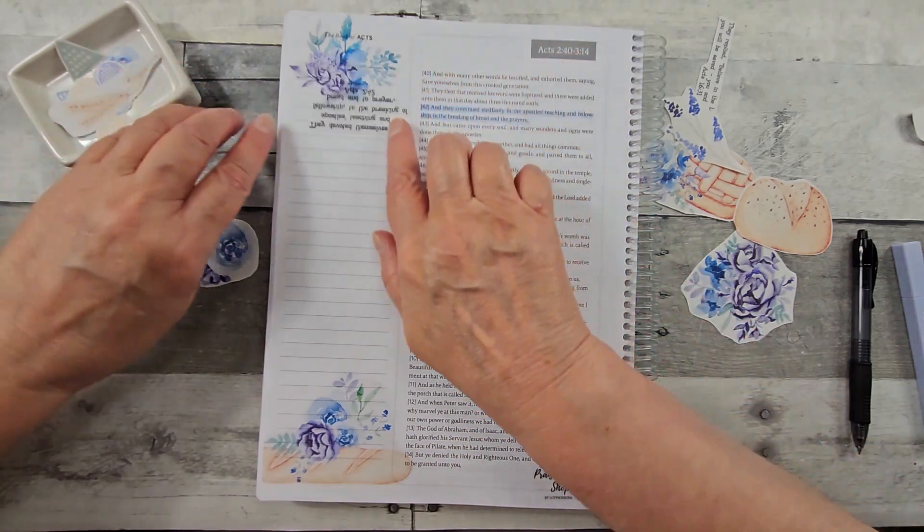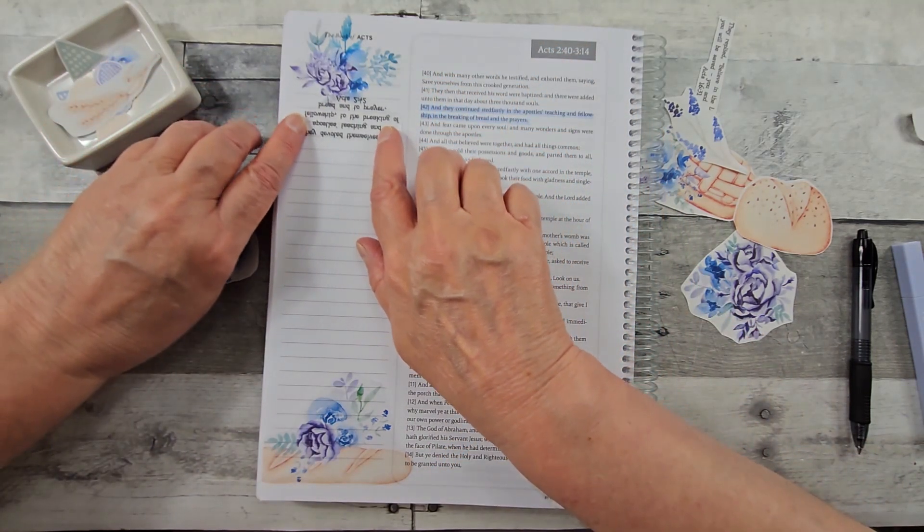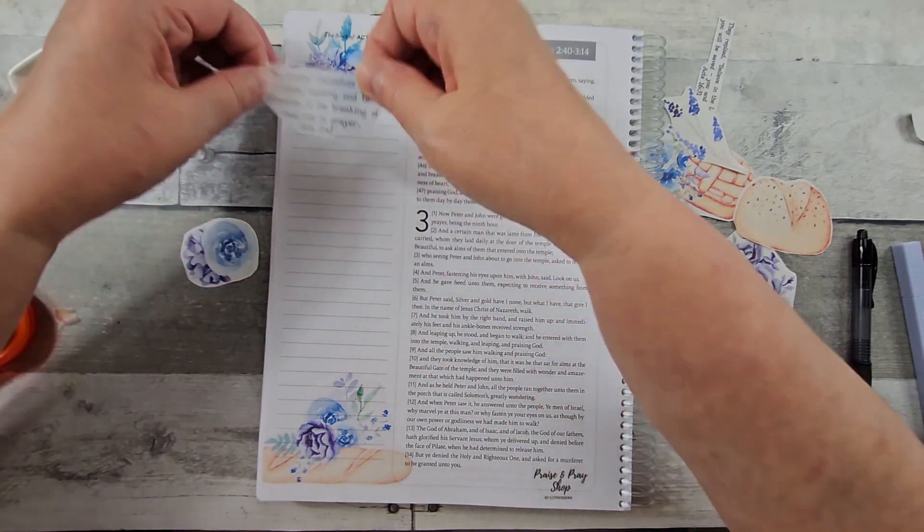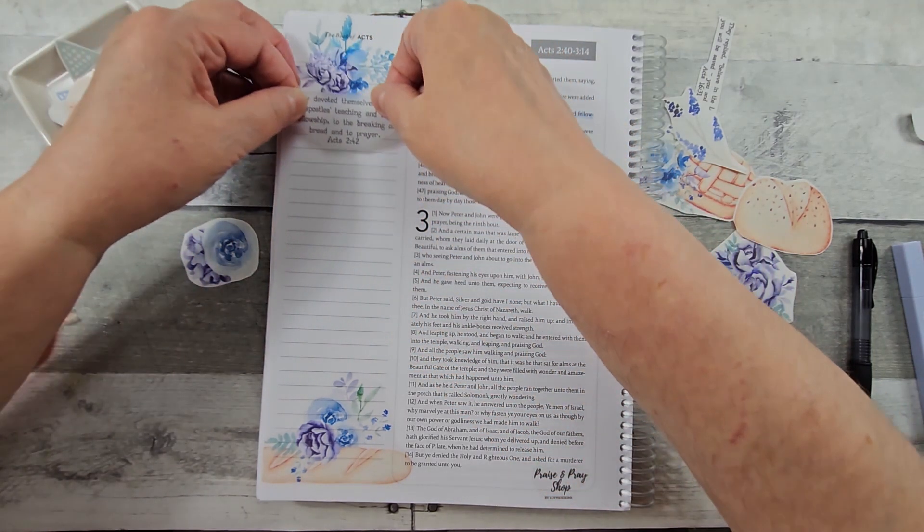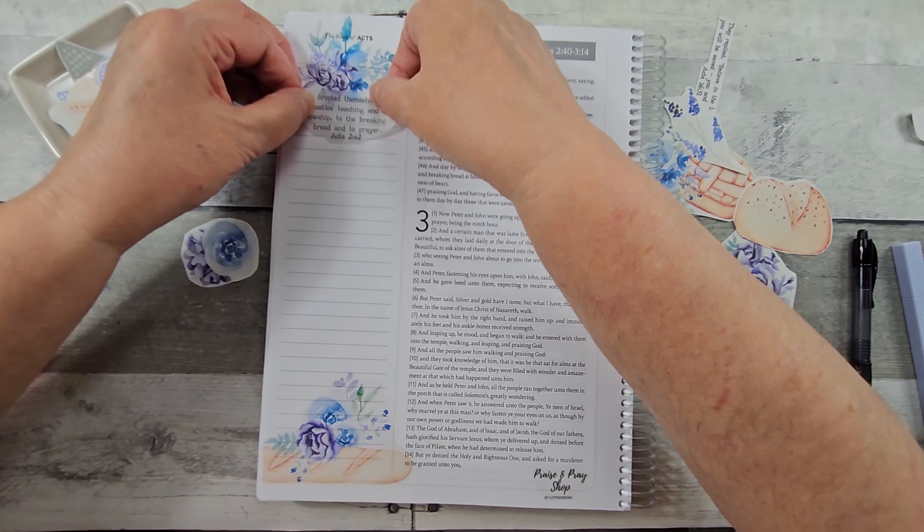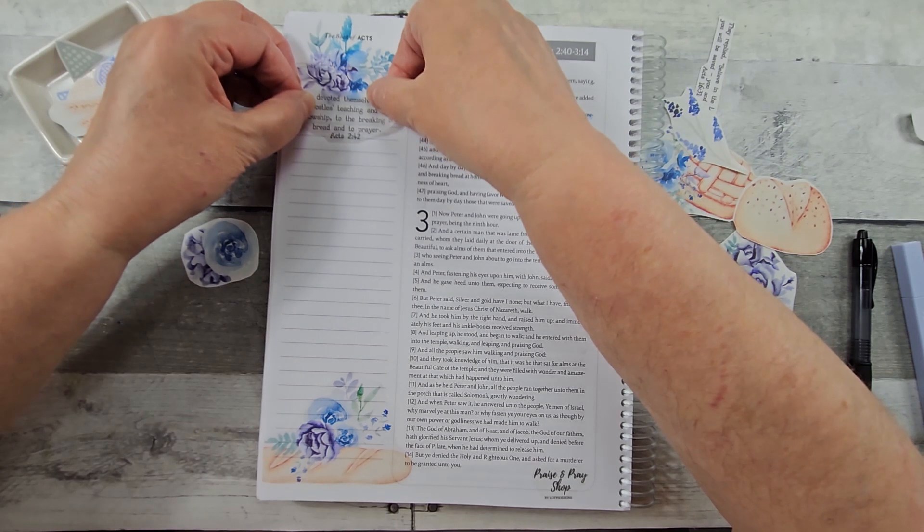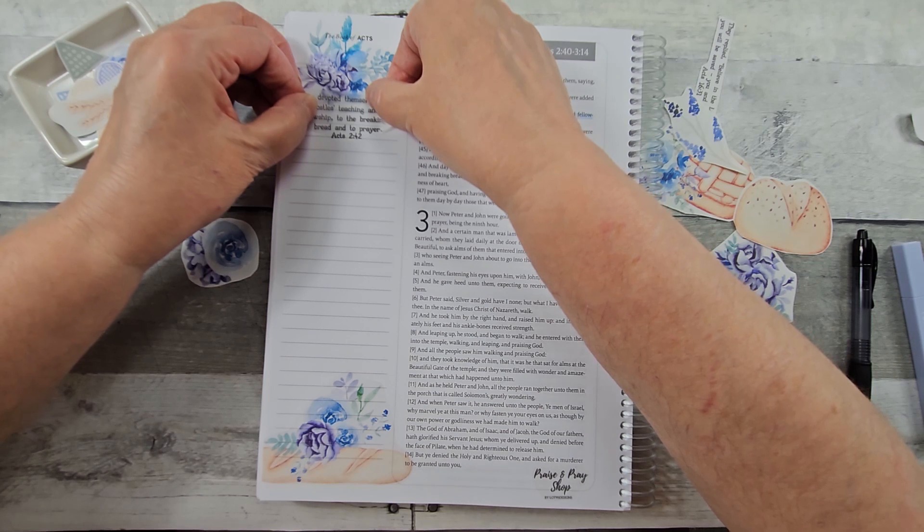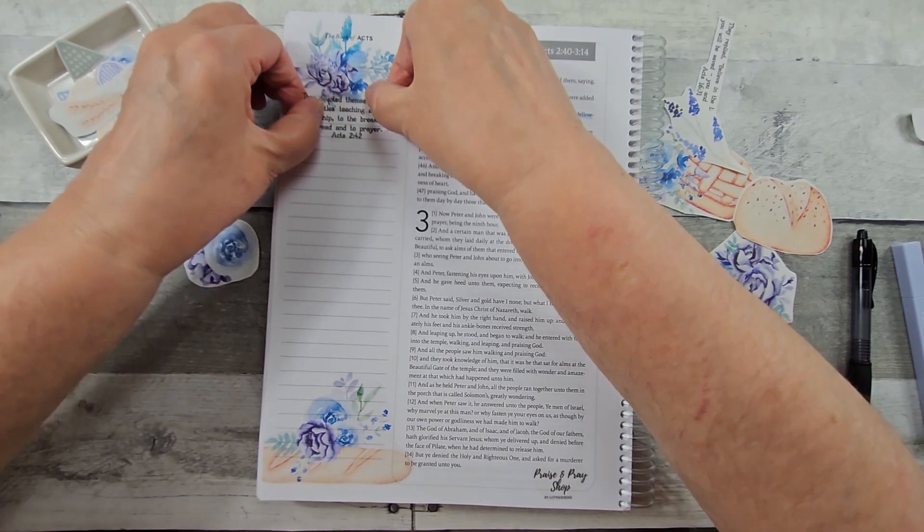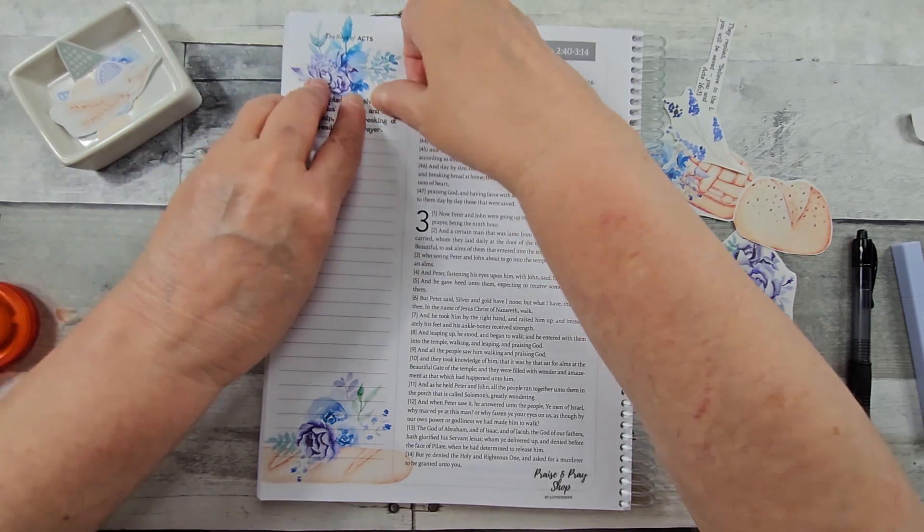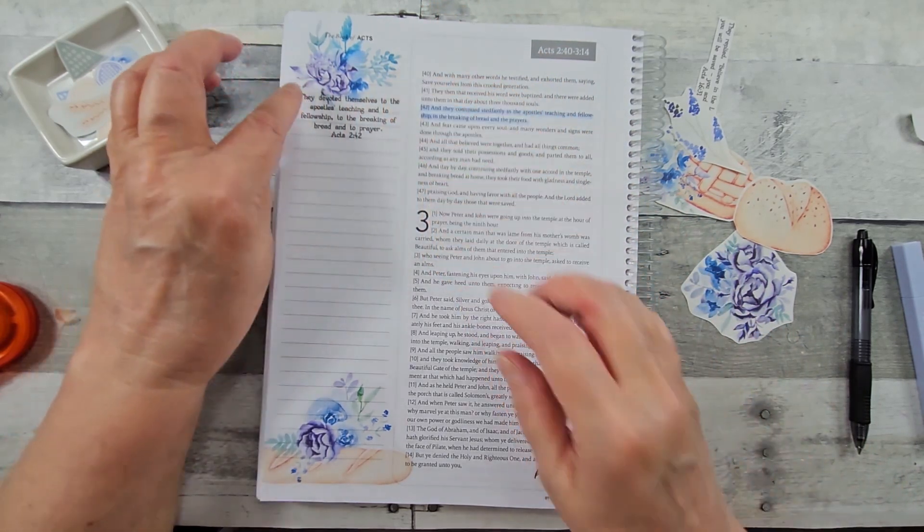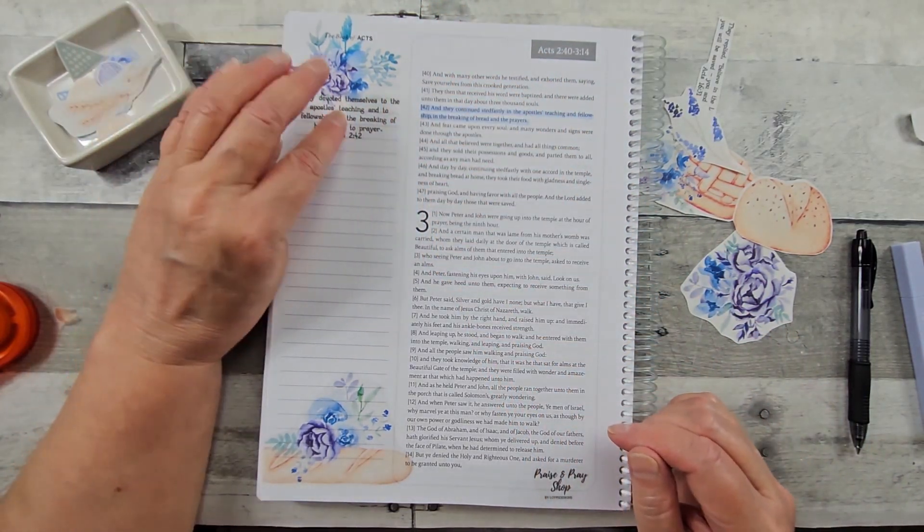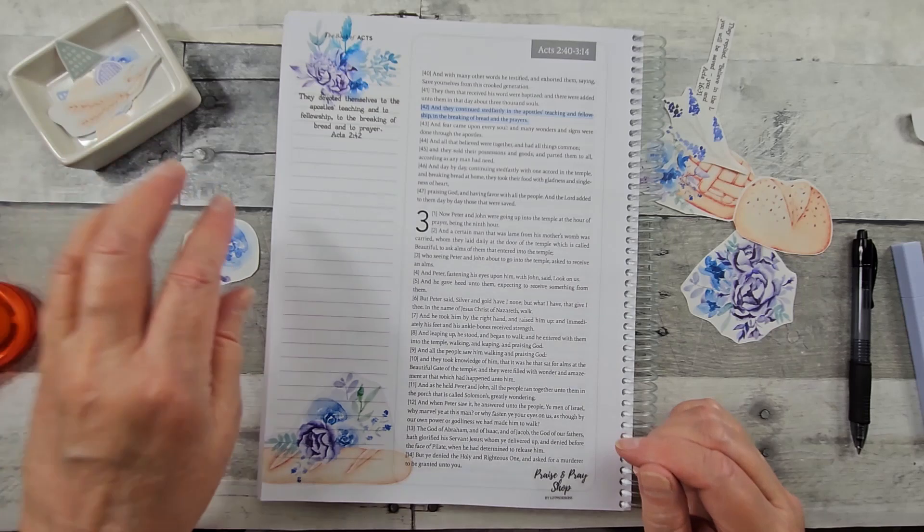And let's see. Where do I want to get this? Just about. Oops. With this paper, once it goes down, there's no peeling it back up. Trust and believe, I've tried it. It'll tear the paper. Or if just a little bit gets attached, you usually can remove that safely.